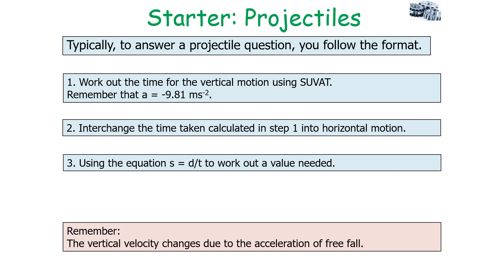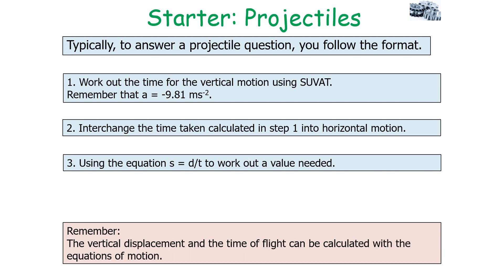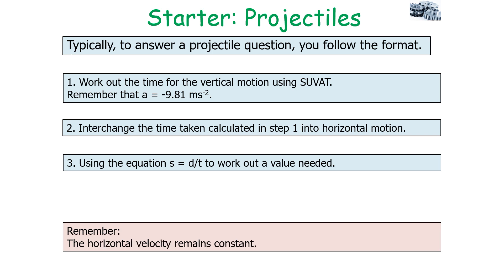Remember, the vertical velocity changes due to the acceleration of free fall, so vertical displacement and time of flight are calculated using the equations of motion, while the horizontal velocity remains constant throughout.